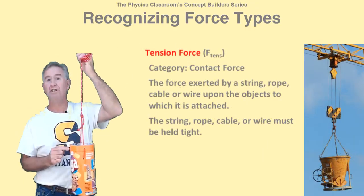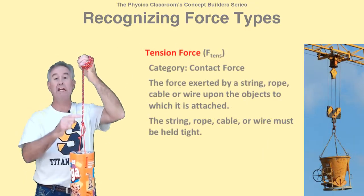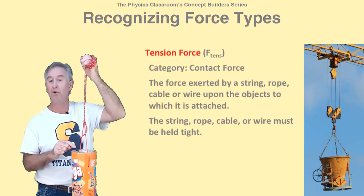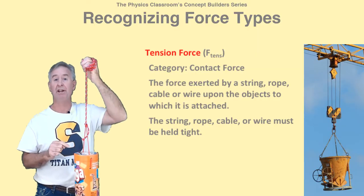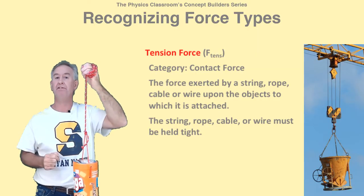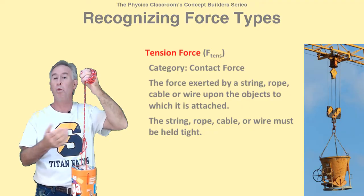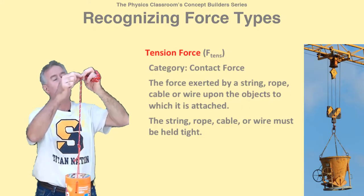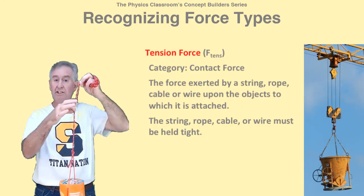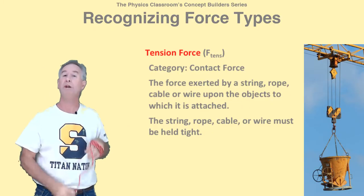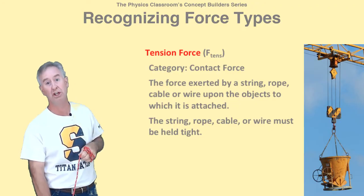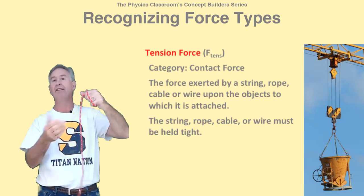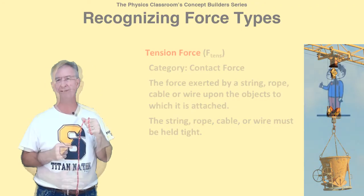When an object is attached to a string, rope, wire, or cable, we say there's a tension force on that object as a result of its interaction with the string, rope, wire, or cable. As long as the opposite end is secured and the string is held tight, we say there's tension in the string. If the string's not held tight, then there's no tension.